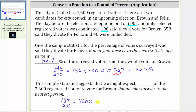Just to show the difference, let's also find 32.7% of 7,600. To find the percent of a number, we convert the percent to a decimal and multiply. We know the decimal is 0.327, so we have 0.327 times 7,600. These answers will be close, but this product will have more of an error.